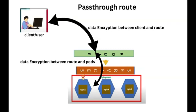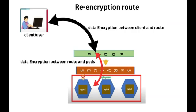The third type of secure route is re-encryption. With re-encryption routes there is full encryption from the client to the pod, just like pass-through. However, the encryption from the client to the router is different from the traffic encryption from the router to the pod, so you might have different certificates for a re-encrypt route.